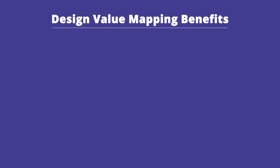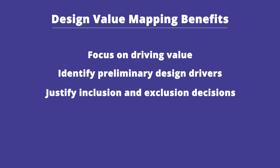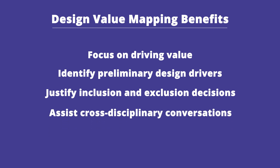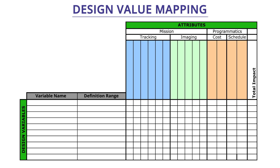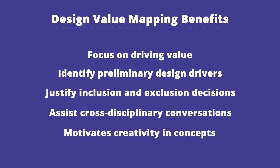The benefits of a design value mapping process include focusing attention on driving value, identifying preliminary design drivers, and providing documentation and justification for inclusion and exclusion decisions on factors affecting a trade space study. We've also found it's incredibly effective as a boundary object for cross-disciplinary conversation. In complex systems, domain experts often don't talk to one another or locally optimize within their own domain. By collaboratively filling out a DVM, these experts can identify mismatches in mental models or where decisions might negatively affect other decisions. A DVM also motivates creative proposing of new design variables and helps break away from anchoring on prior concepts that may not make sense going forward.